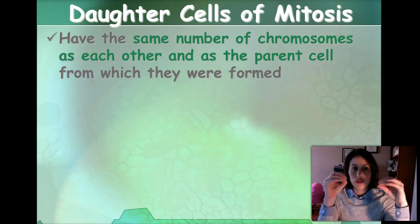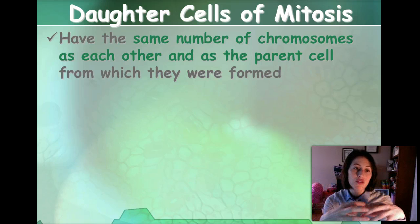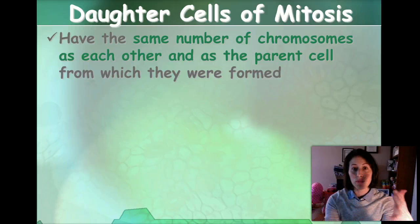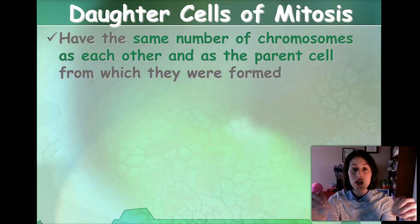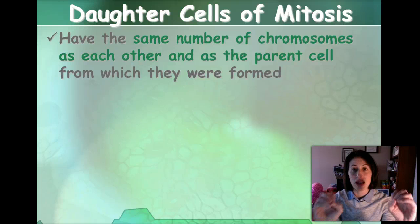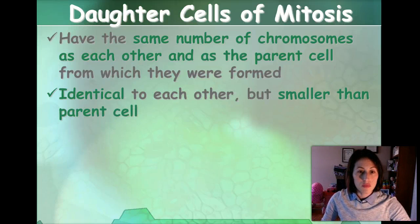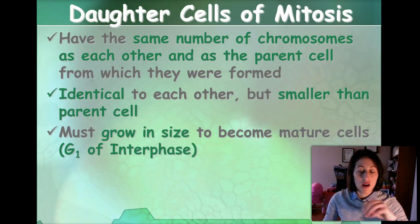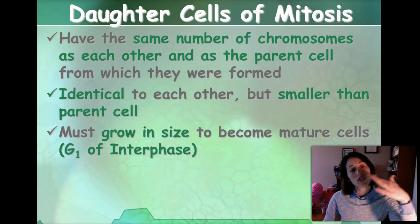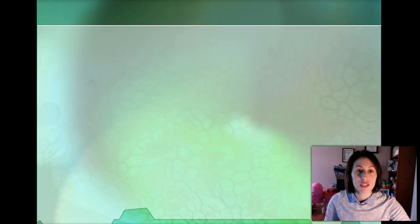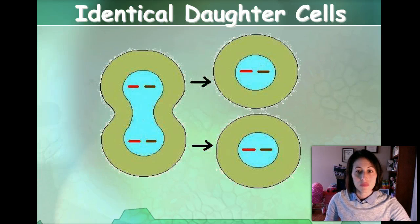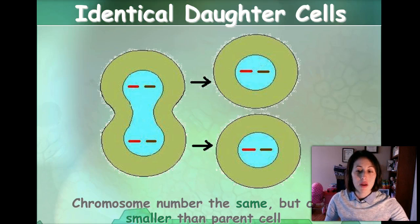So daughter cells — now we have two cells. They have the same number of chromosomes as each other and as the parent cell from which they were formed, so they are identical to each other. The parent cell started out in humans with 46 chromosomes, replicated, and went through the process of mitosis and cytokinesis. So now these daughter cells have exact replicas of the DNA — they have 46 chromosomes. They are identical, but they're going to be smaller. After cytokinesis, the cell goes back into G1 of interphase, where it's going to grow in size and become a mature cell. The chromosome number is the same, but the cells are going to be smaller.